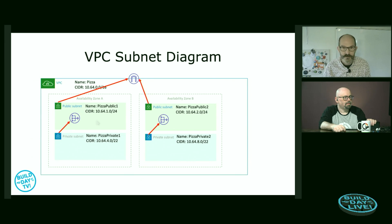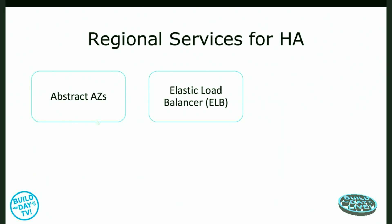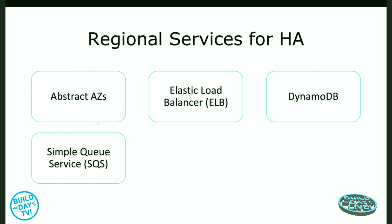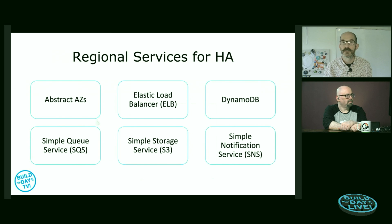We still need to build an application on top of that network. We're going to use a regional service to provide high availability — its job is to abstract away the availability zones underneath and deliver a service independent of a specific availability zone. The Elastic Load Balancer is the most common way of abstracting away a bunch of EC2 virtual machines. Network connections come in and are distributed across a group behind it. There are other options too — DynamoDB, the Simple Queue Service, S3, or the Simple Notification Service — but the most common one is the Elastic Load Balancer.